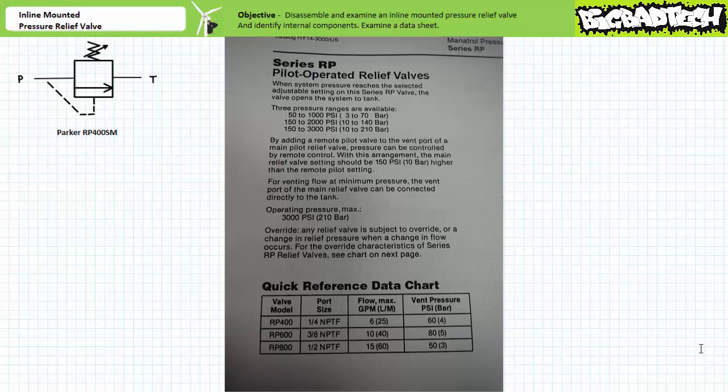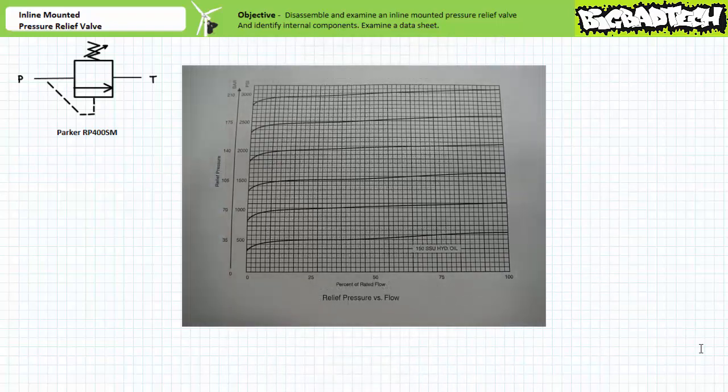The quick reference chart shows us that this particular valve is designed to accommodate a flow rate of up to 6 gallons per minute, or 25 liters per minute. Looking at the relief pressure versus flow rate graph on the next page, we observe a collection of curves characteristic of a pressure relief valve exhibiting pressure override. Pressure override is essentially a change in relief pressure as a function of flow rate. Note the curves all use the same reference condition, a hydraulic oil with a given viscosity or thickness in this case of 150 SSU. We'll discuss viscosity and viscosity units in later lectures.